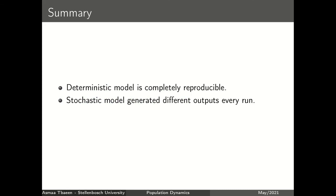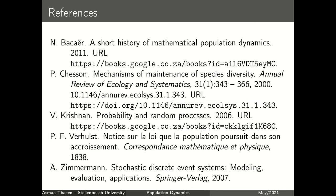In conclusion, deterministic models are all about their initial conditions, and adding variation or randomness to the model drives you away from the certainty of deterministic models. Here are some articles I used to prepare this presentation. Thank you everyone for being here today.